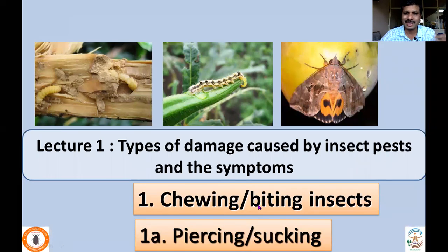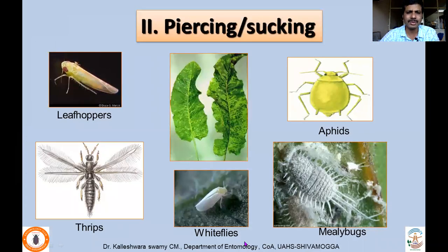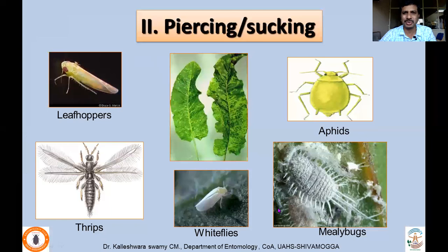In this second lecture, I'll be concentrating on the discussion of piercing and sucking insects and the type of damage these insects cause and the symptoms pronounced. Piercing and sucking insects are those which have a proboscis, which is a modified part of the labium, wherein mandibular or maxillary stylets are modified in order to suck juice from various parts of the plant — it may be root, panicle, flowers, seeds, or anything like that.